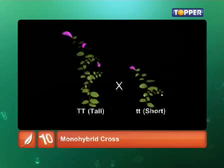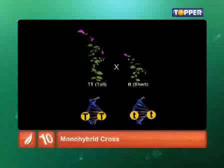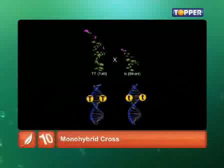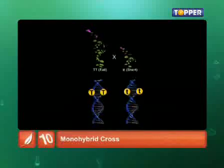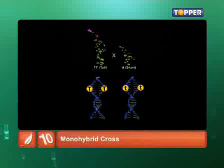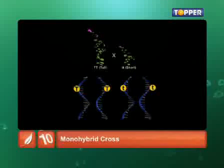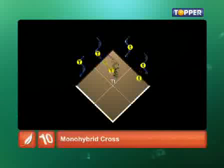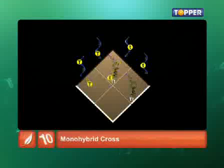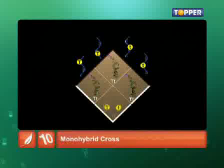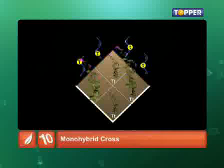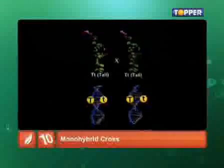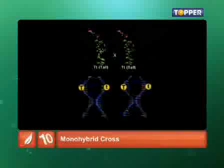The tall TT plant produced two tall capital T gametes, while the small t small t plant produced two small t gametes. These were combined to form capital T small t plants in the F1 generation. When this capital T small t plant produced gametes, they were of two types: a capital T and a small t.